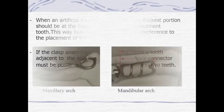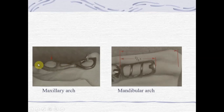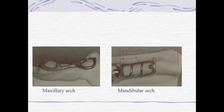Most minor connectors that support the clasp assemblies are located on the proximal surfaces of teeth adjacent to the edentulous areas. Where clasp assemblies are located on proximal surfaces adjacent to edentulous areas, the minor connectors should be broad buccolingually but thin mesiodistally, positioned in the associated lingual embrasure. The thickest portion should be at the lingual line angle of the abutment tooth. In the maxillary arch for distal extension cases, the entire ridge including the maxillary tuberosity should be covered. In the mandibular arch, only two-thirds of the length of the edentulous arch is covered.